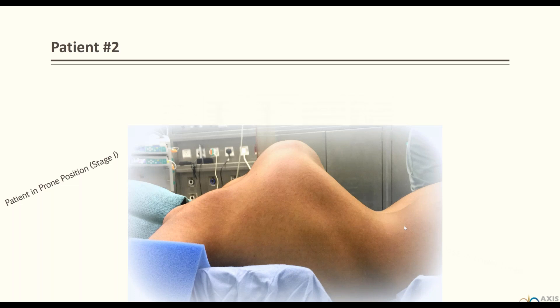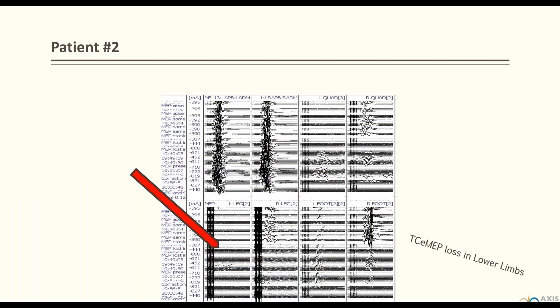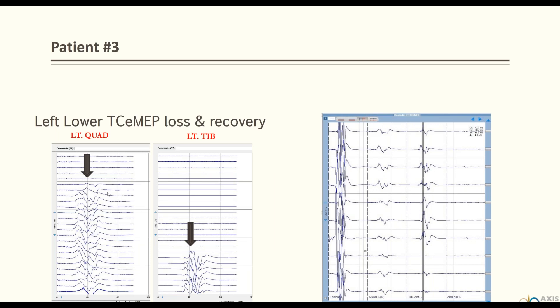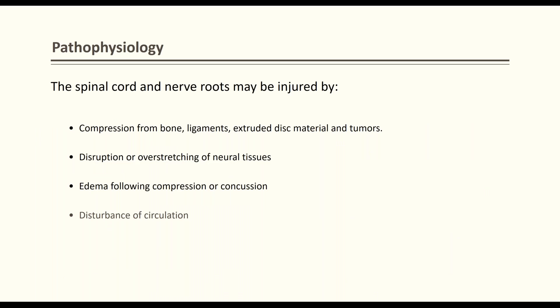Another case: a 19-year-old female with scoliosis and no pre-existing deficits lost bilateral MEPs from tibialis anterior and peroneus on both sides after placing six screws. Signal returned on the left but not the right. Post-operatively, the patient was unable to move her leg — MRI revealed a stroke at T9 caused by a screw impinging on the supplying vessel. The loss was detected within 1 minute 50 seconds between MEP runs, and the patient recovered within 72 hours.